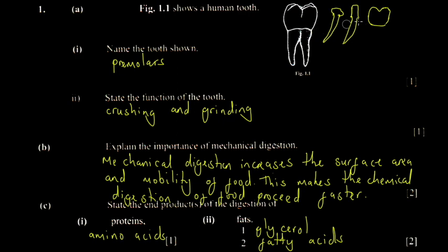The premolars look like this, and the reason I would identify this as a premolar is because it has two roots. Normally premolars are denoted with two roots just like this. Then you have what's called the molar teeth.